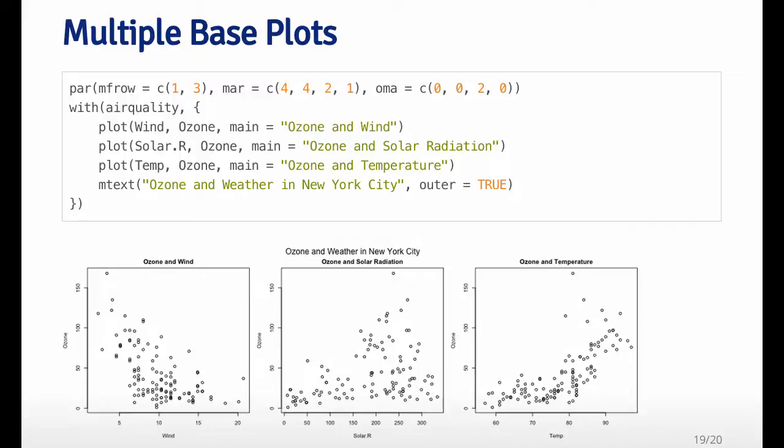So here in this call to par, I set MF row equal to one row, three columns. I set the margins to be a little bit smaller than the defaults, and then I set the outer margin to be actually bigger than the default. The default for the outer margin is zero all around.